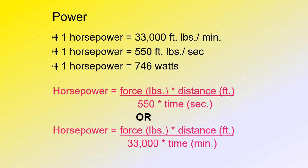Another measure of electrical power is horsepower, where one horsepower equals 33,000 foot-pounds per minute, or 550 foot-pounds per second. If you want to convert watts to horsepower or horsepower to watts, one horsepower equals 746 watts. Here you see on the slide two formulas to help you determine horsepower.